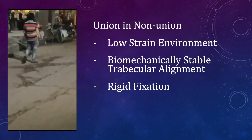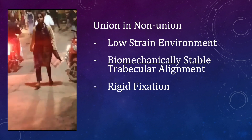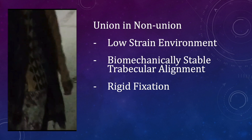In this case we brought union into a non-union by using a low-strain environment provided by the dynamic hip screw, fixed after achieving good compression at the fracture site by pulling the lag screw outwards. Additional stability was provided by a cannulated cancellous screw. We provided a biomechanically stable trabecular alignment by adding more valgus to the construct — the trabecular angle was close to the 180-degree cutoff — and fixation was rigid. Valgus osteotomy is definitely the standard treatment, but when not prepared for it, you can use these basic principles. Thank you.